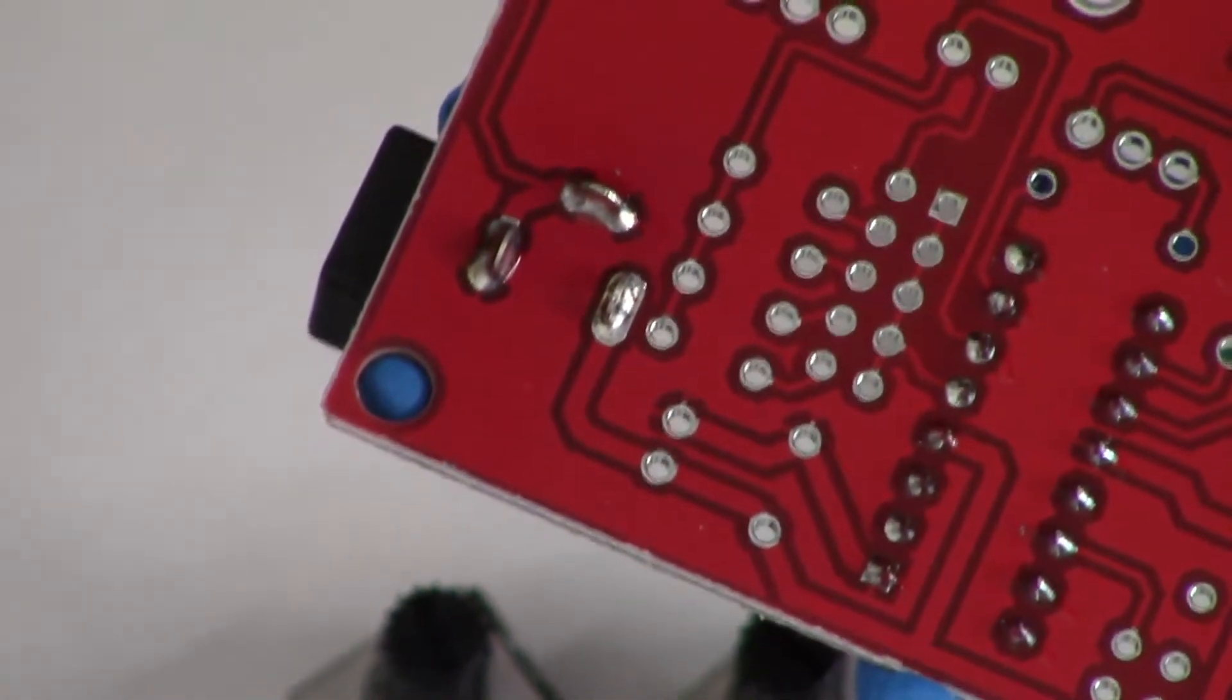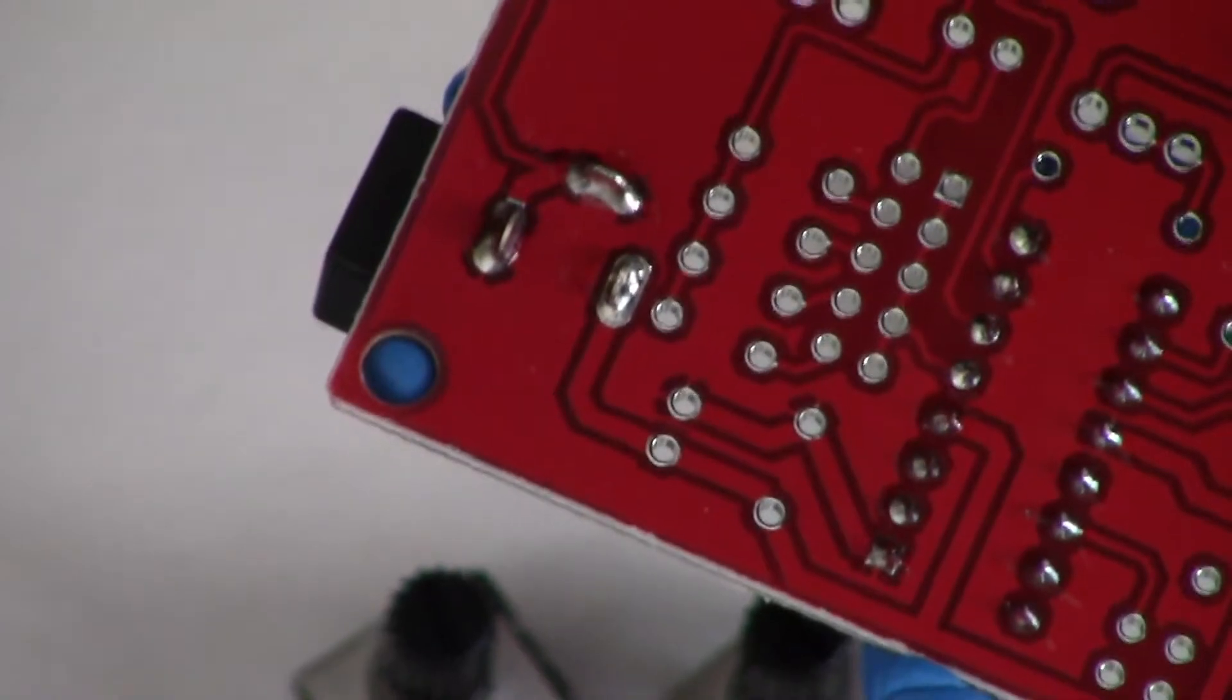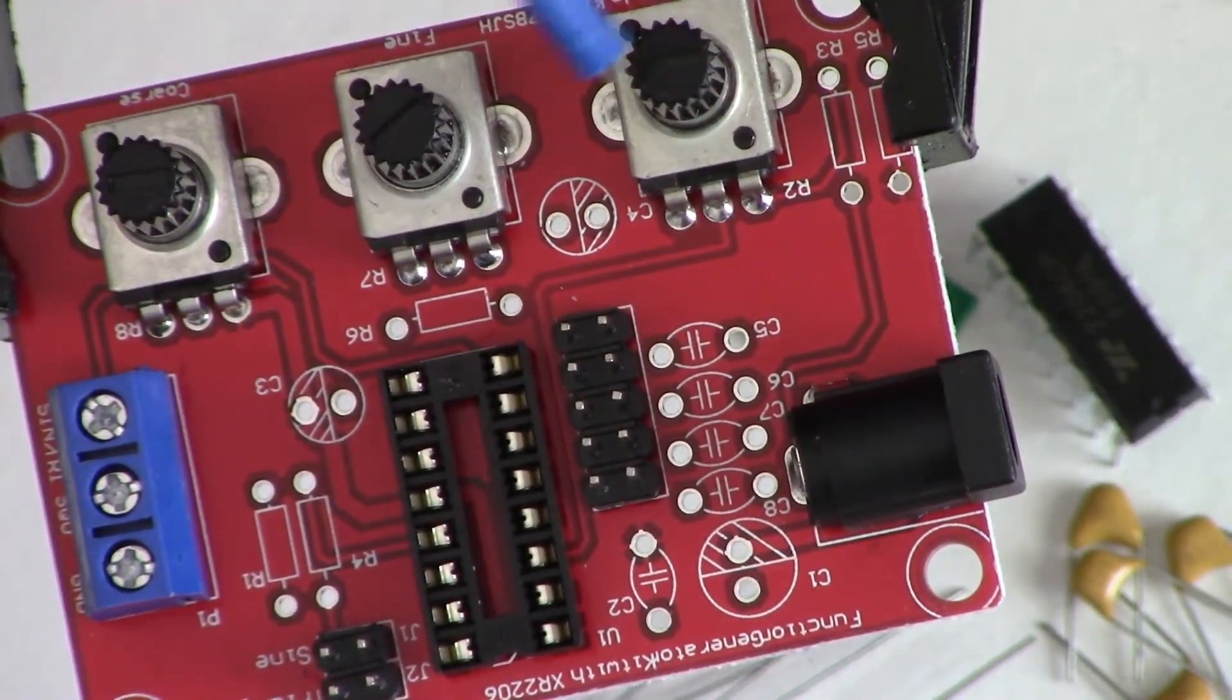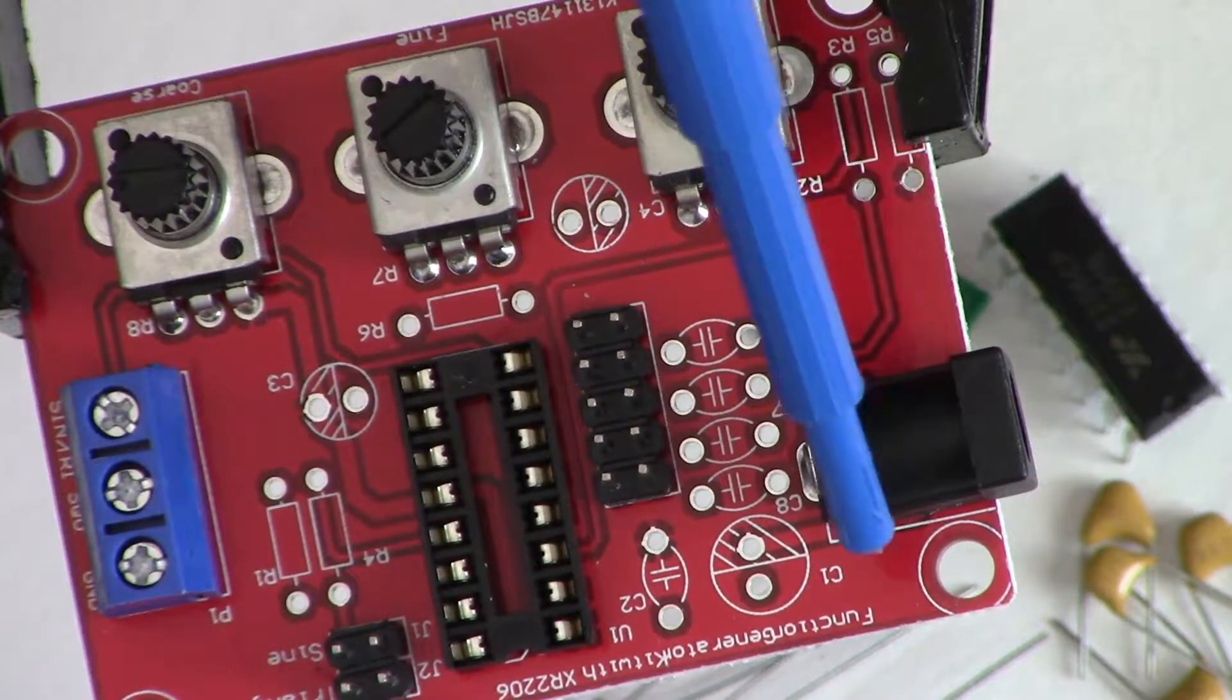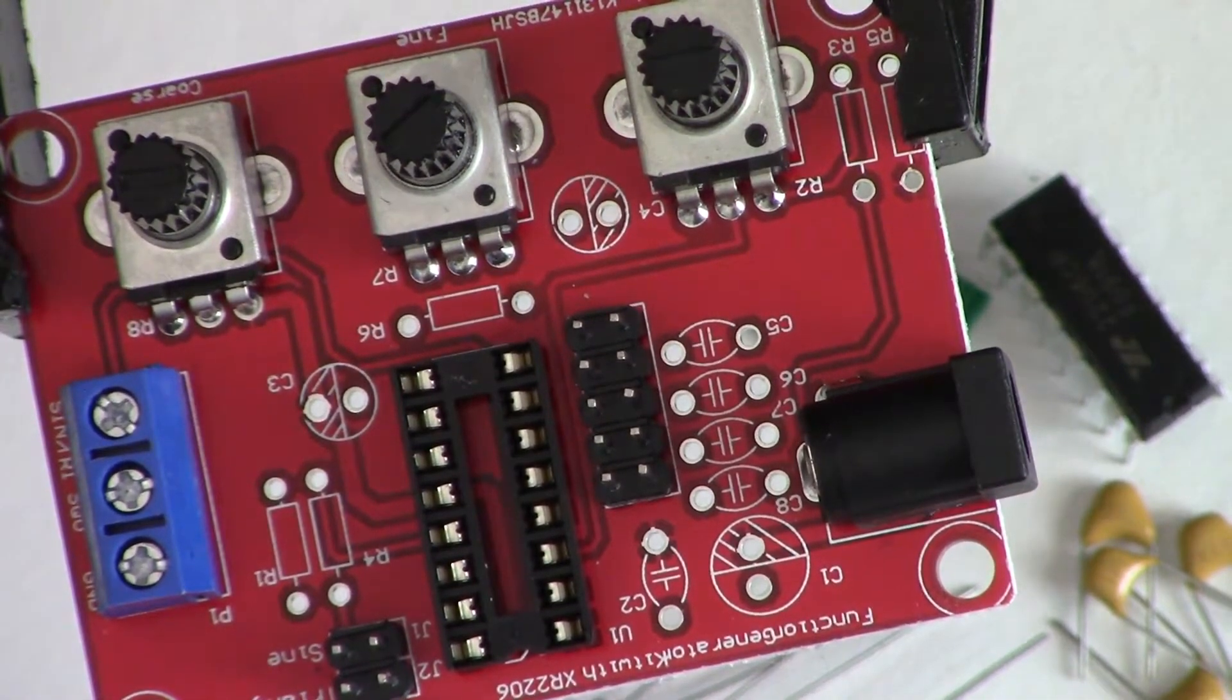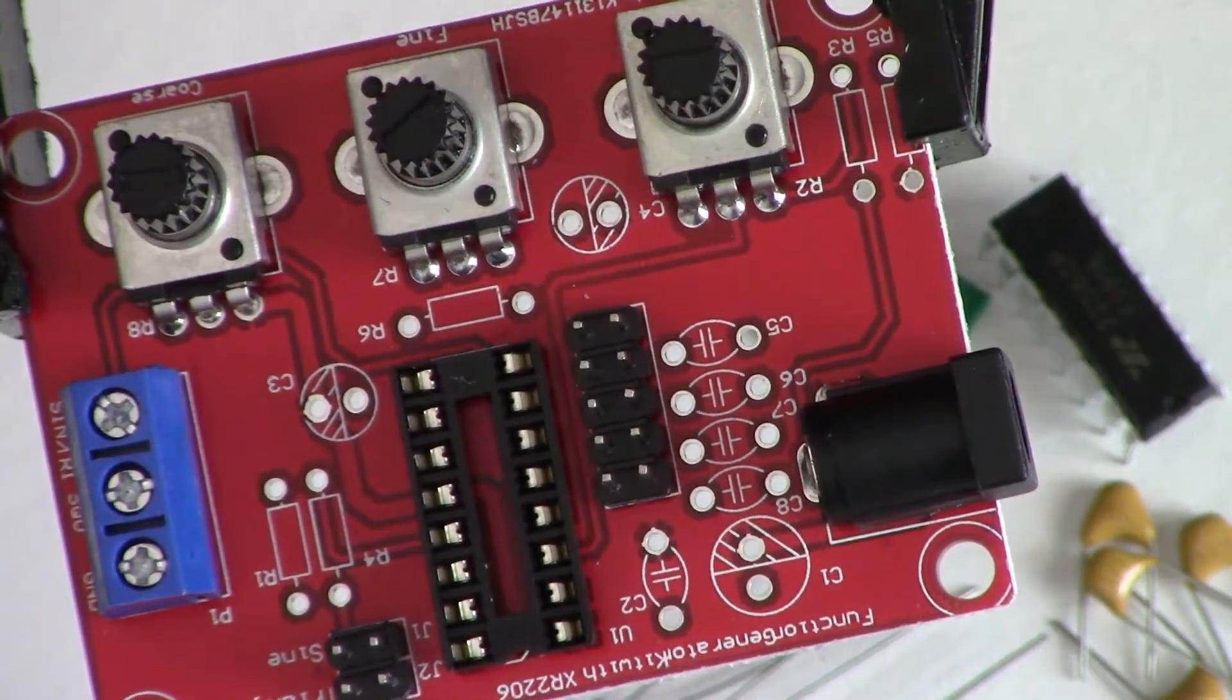Alright, just a little progress shot. The three pots are installed. I have the various headers, the barrel jack, and the DIP socket. So really all that's left are the capacitors and the resistors, and then we'll hook this up to the oscilloscope. Fingers crossed, we'll have some good results.